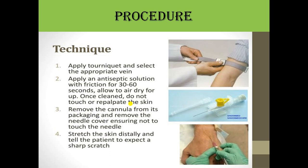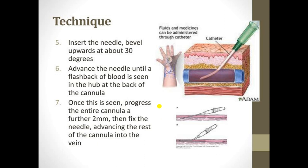Stretch the skin digitally and tell the patient to expect a sharp scratch. Insert the needle bevel upward at about 30 degrees. Advance the needle until a flashback of blood is seen in the hub at the back of the cannula. This is the most important step — when you insert the needle and see blood flashback, that confirms correct placement.